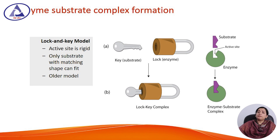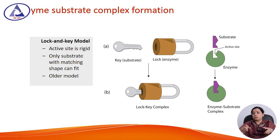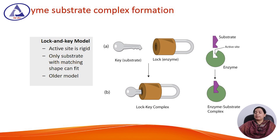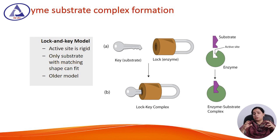How the substrate binds with the enzyme can be described by two models. One is the lock and key model and the other is the induced fit model. In the lock and key model, the enzyme's active site is very rigid — only a substrate with a matching shape can fit. It is the older model. Just like a lock has only one specific key, only one specific substrate can combine with the enzyme.